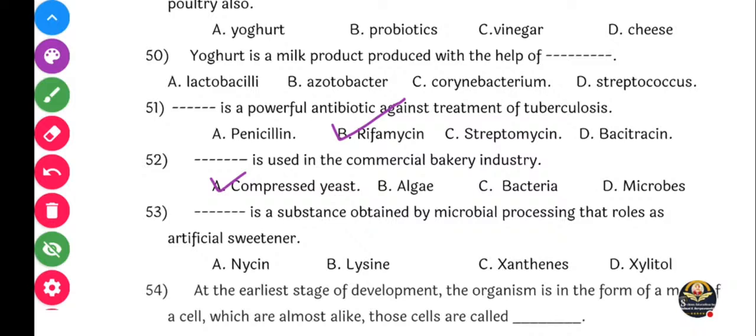Next question: Dash is a substance obtained by microbial processing that rolls as artificial sweetener. Yape ke artificial sweetener kona ahe? Options: Nicene, Lysine, Xanthinase, or Xylitol. Correct answer: Xylitol, option D.